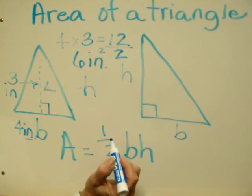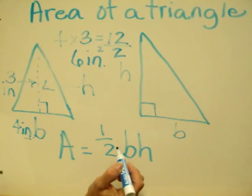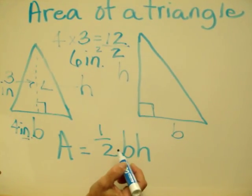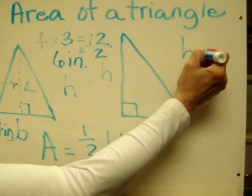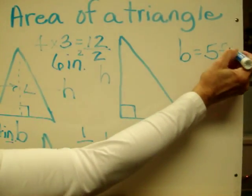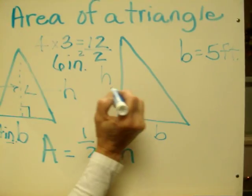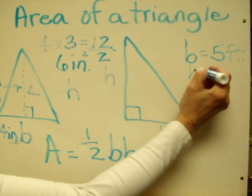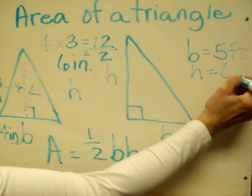Now let's take a look at the right triangle and use some other numbers. Let's say for example our base on this triangle is five and we'll call this feet and we'll let our height on this triangle be six feet.